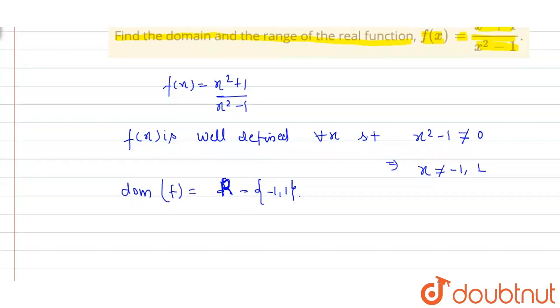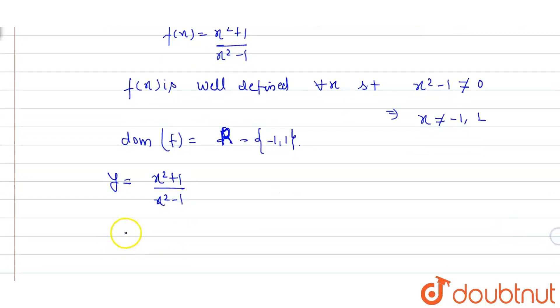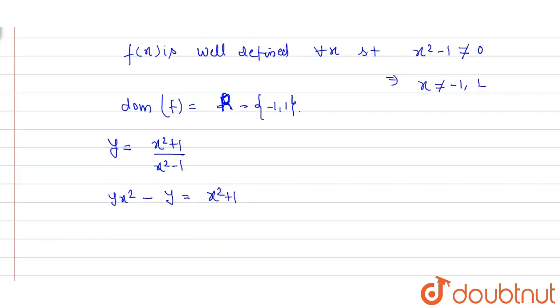Next, I will find the range. Let's suppose the function equals y. Y is equal to x square plus 1 upon x square minus 1. So, x square y minus y is equal to x square plus 1.